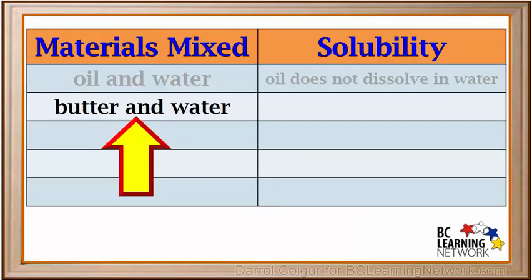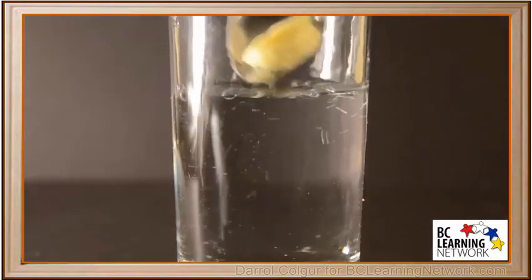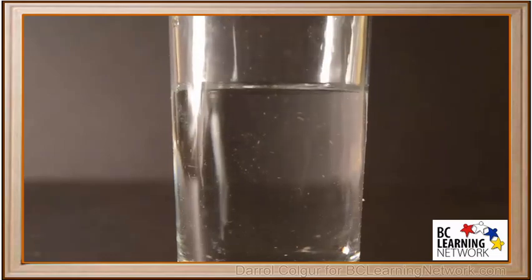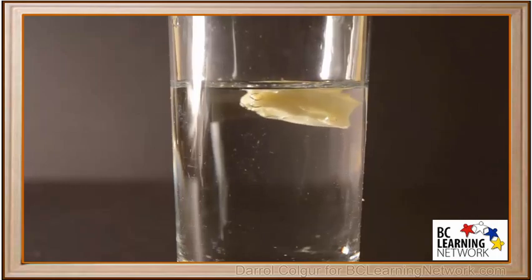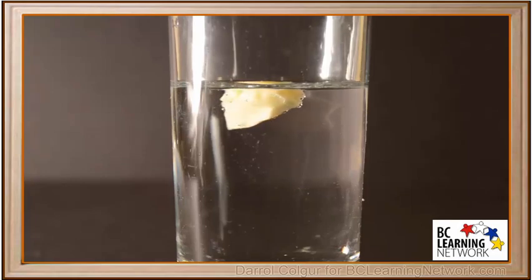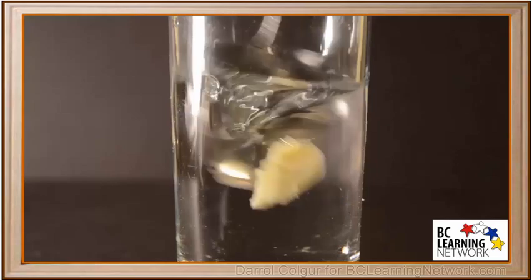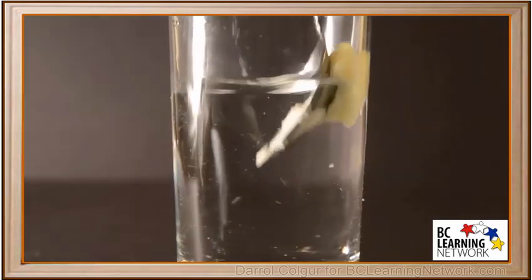The next materials we'll try are butter and water. When we try to add a piece of butter to the water, it tends to stick to the spoon. The water actually repels the butter. Notice there is no sign that the butter is trying to dissolve in the water. We'll try to stir it again, but the butter sticks to the spoon.